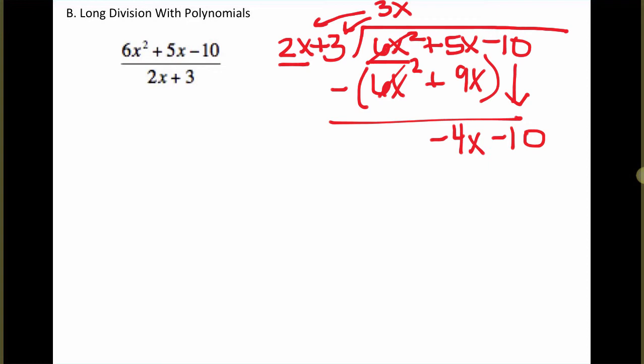Now we're going to repeat that same process. Again, we're just looking at the 2x, and this time, we only will look at the negative 4x. So 2x times what gives us negative 4x? Well in this case, it would be a negative 2. And so that's our next term in our quotient up here at the top.